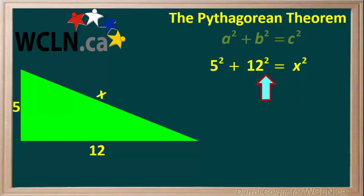So we have the equation 5 squared plus 12 squared equals x squared. We can use a bit of algebra to determine the value of x.